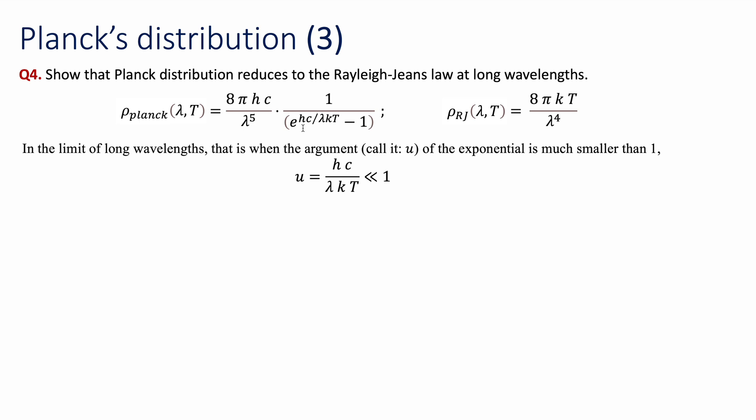Now, if we're looking at long wavelengths, let's see what happens to this argument of the exponential in Planck's distribution. Since we have that lambda is in the denominator, as this one goes to infinity, this argument is going to go to 0. In that limit, we can use Taylor expansion to see how this function behaves.